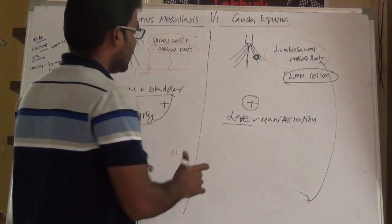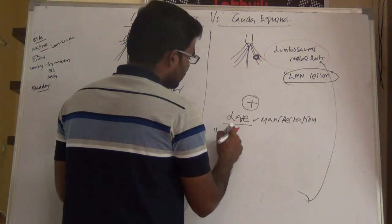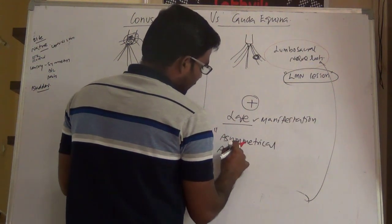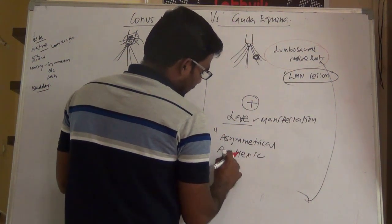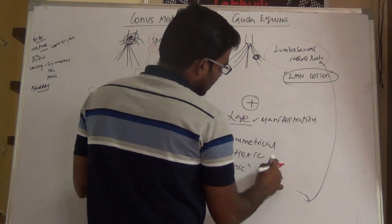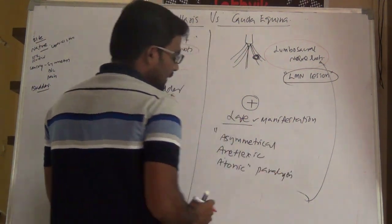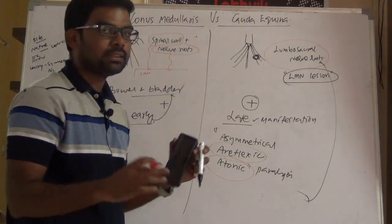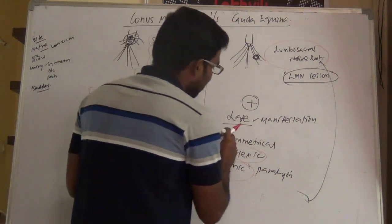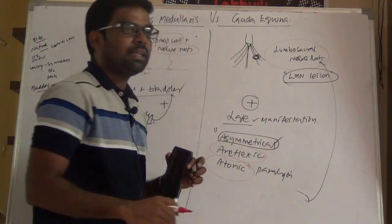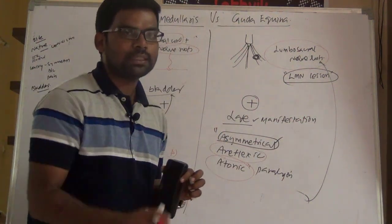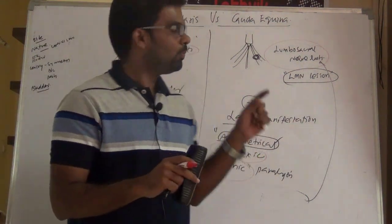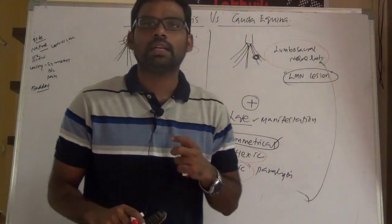To summarize for remembering: cauda equina syndrome is characterized by asymmetrical, areflexic, and hypotonic paralysis below the level of the lesion. As it is an LMN type of lesion, reflexes are absent and tone is decreased. Because only the nerve roots are involved, the presentation is not symmetrical — it is preferentially present on one side where the nerve roots are involved.